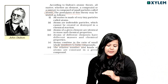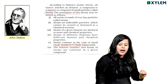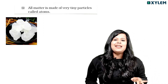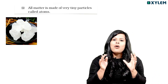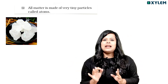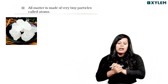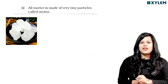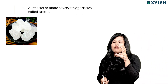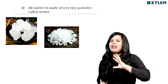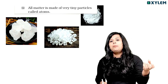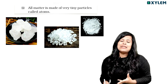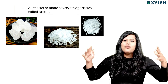The last postulate: the relative number and kind of atoms are constant in a given compound. In a compound, the relative number and kind of atoms are constant. We can find the number of atoms in a compound, and they remain constant.